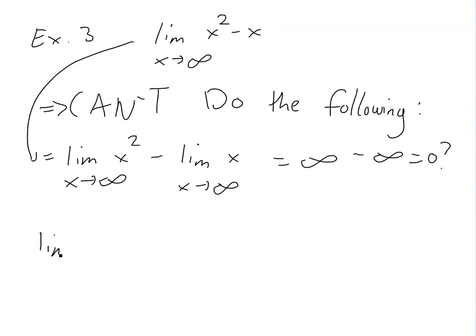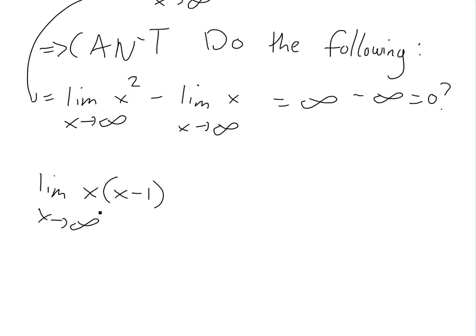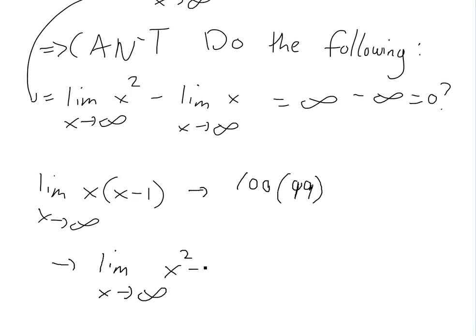To actually solve this, we can simplify the function. We take the limit as x approaches infinity of x(x minus 1) by factoring out x. In this form, as you put in really large numbers — say 100 — you get 100 times 99, a large number times a large number. Put in a million, you get a million times 999,999. So this is approaching infinity. Therefore the limit of x² minus x equals infinity, which makes sense because x² grows faster than x — a large number squared minus itself still goes to infinity.